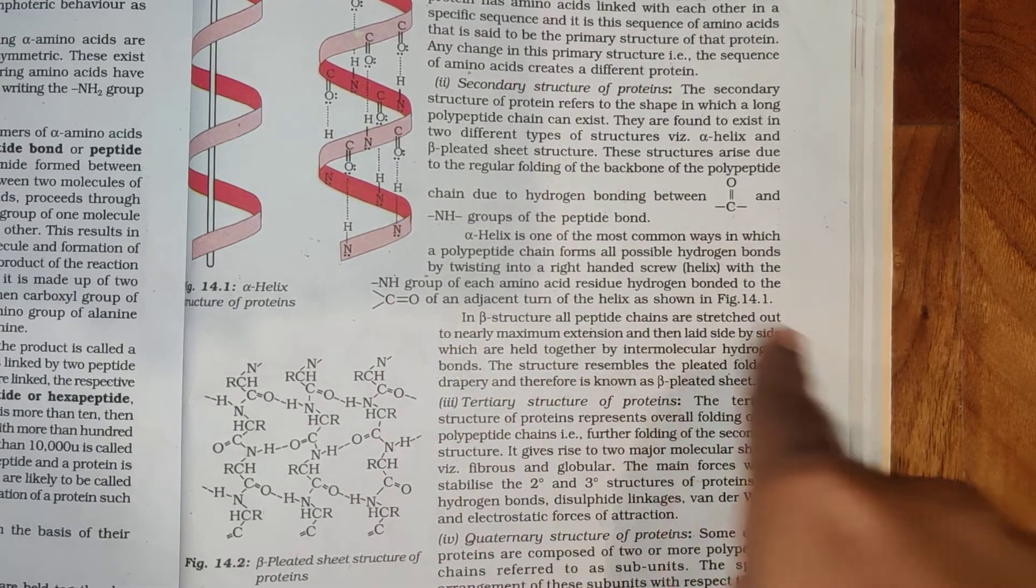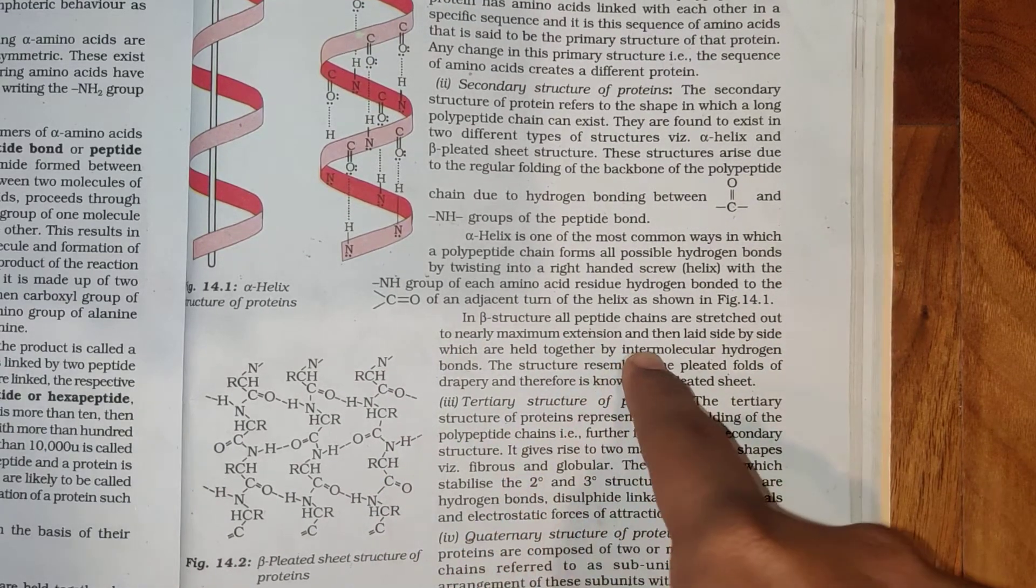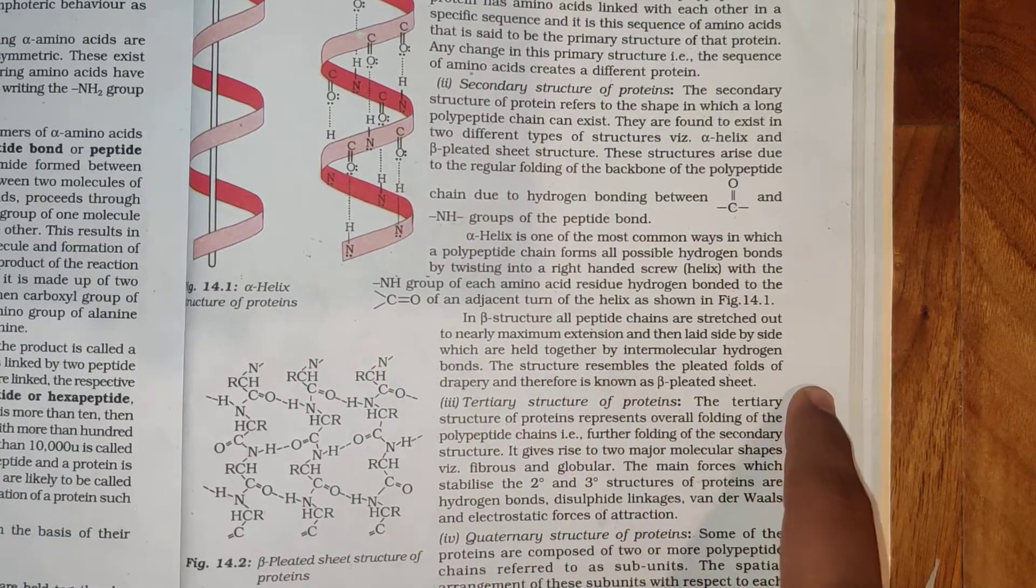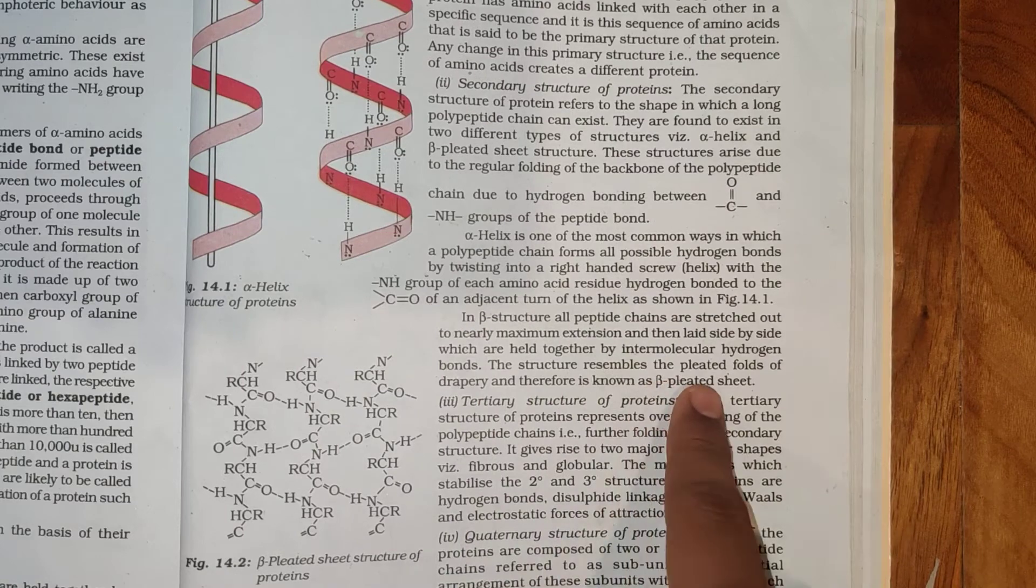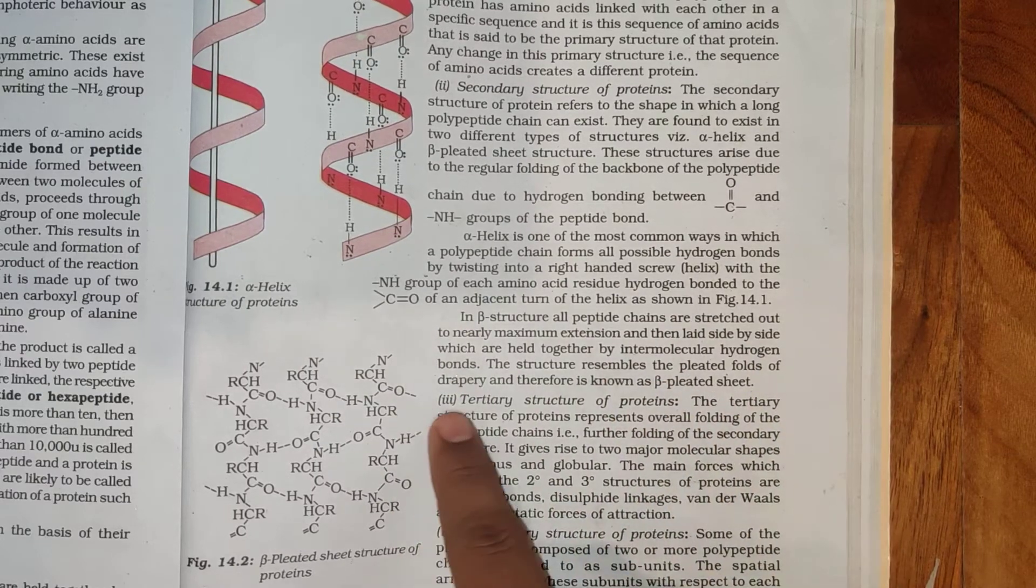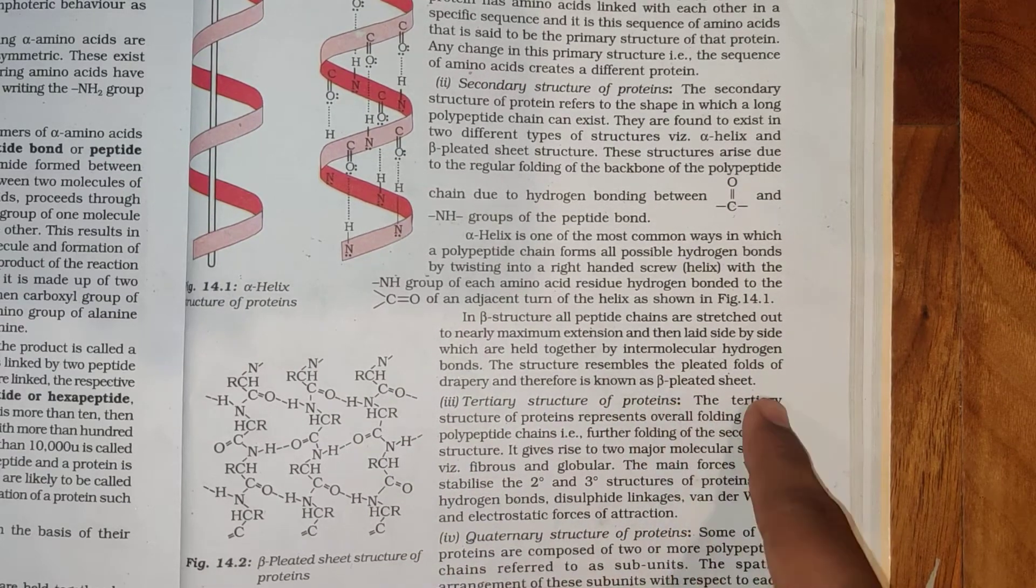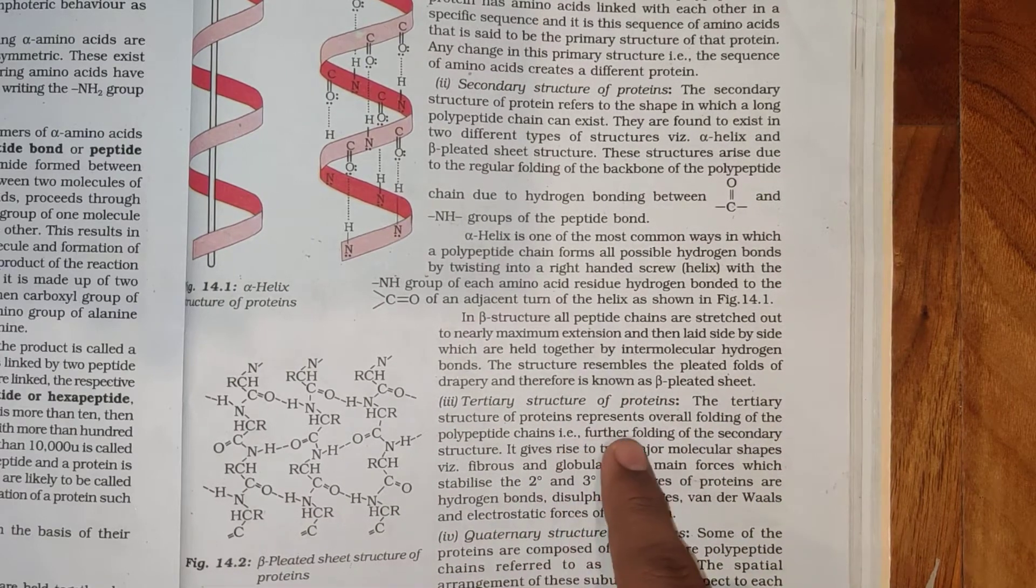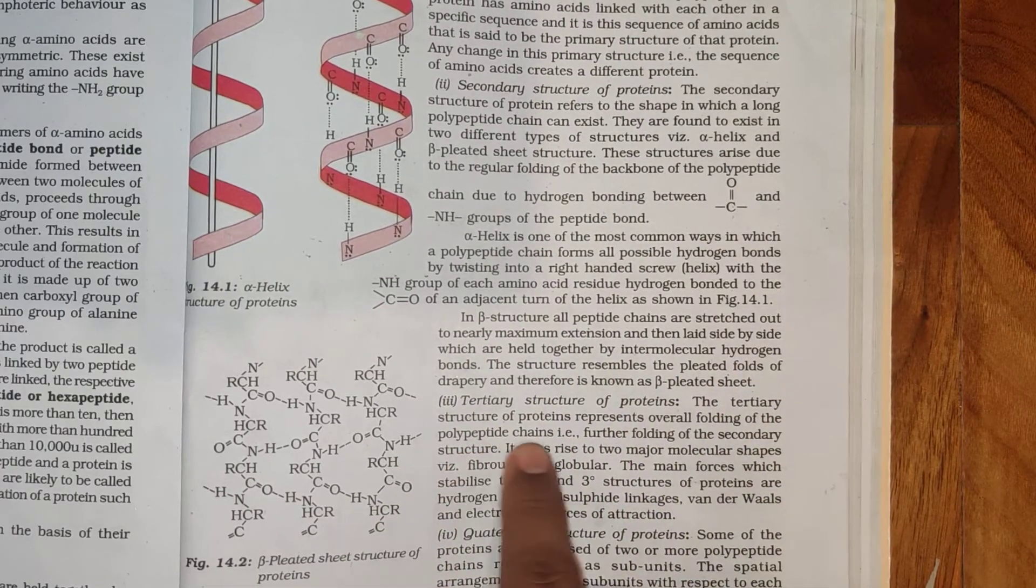In beta structure, all peptide chains are stretched out to nearly maximum extension and then laid side by side which are held together by intermolecular hydrogen bonds. The structure resembles the pleated folds of the drapery and therefore is known as beta pleated sheet.